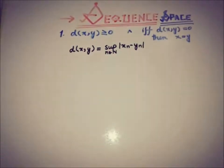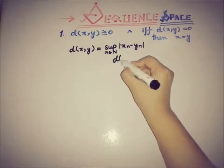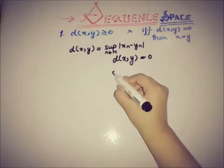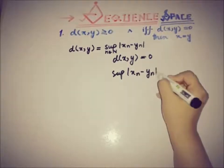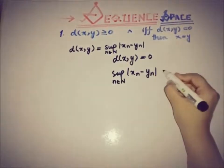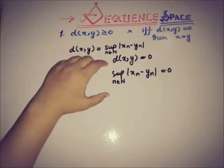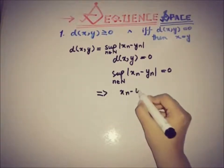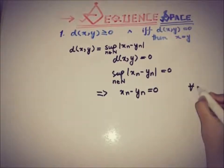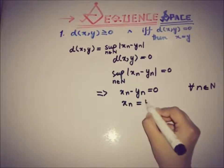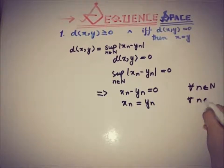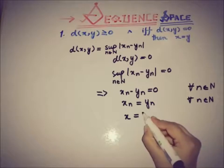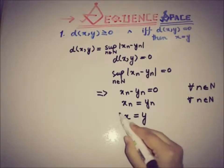Now we check that if d equals zero, then x must equal y. This equals the supremum of |x_n minus y_n| for n in the natural numbers being equal to zero. We know that if the supremum of an absolute sequence is zero, then the sequence is the zero function. So x_n minus y_n equals zero for all n, which means x_n equals y_n for all n, and therefore x equals y.